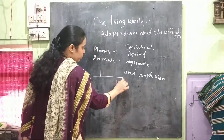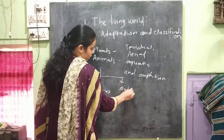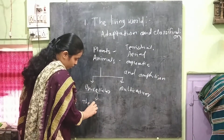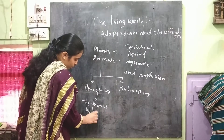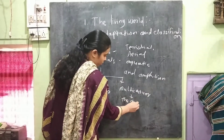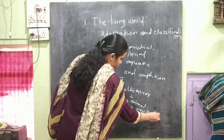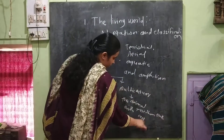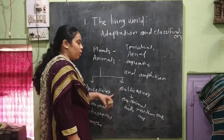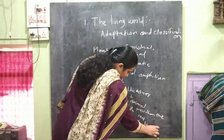Animals can be divided into two types: unicellular and multicellular. Unicellular means the animal has one cell, and multicellular means the animal has more than one cell. An example of a unicellular animal is amoeba, and examples of multicellular animals are camel and lion.